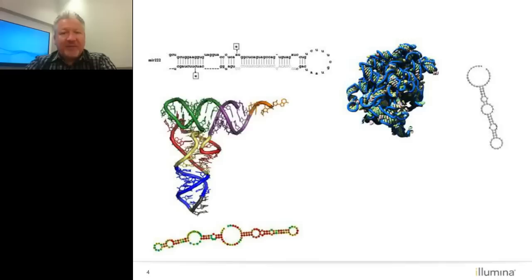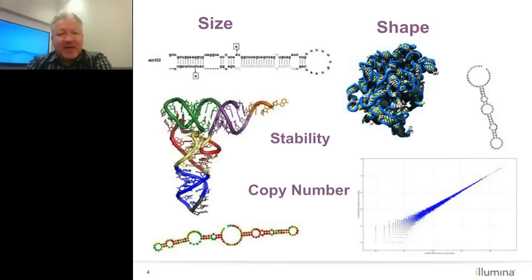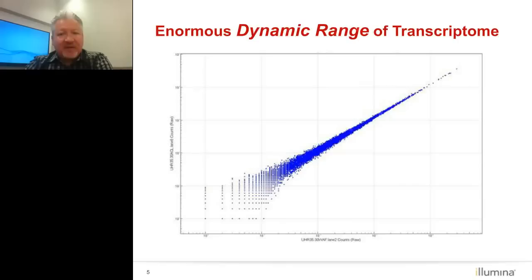Studying RNA compared to DNA is interesting because RNA comes in all kinds of different sizes and shapes, with a different stability profile than DNA. Probably one of the most challenging aspects from a technical point of view is the enormous copy number variation that RNA has compared to DNA. The transcriptome inside any cell has an enormous dynamic range, especially when you look at a population of cells. When we look at 100 nanograms of RNA, representing thousands of cells, we're generally detecting about 15,000 transcripts across a dynamic range of 10 to the fourth, maybe 10 to the fifth.